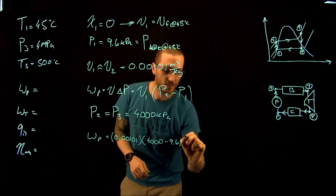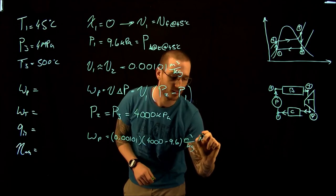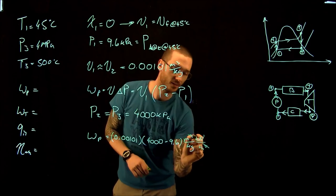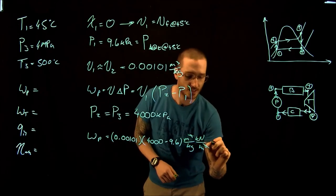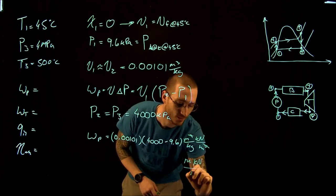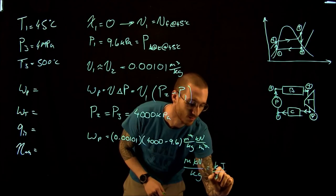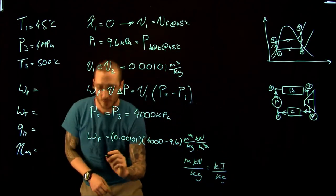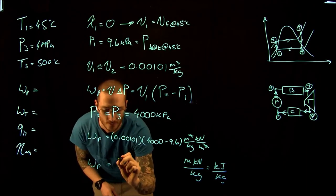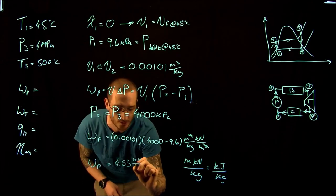The units are m³/kg times kN/m², and canceling m² with m³ gives kN·m/kg, which is kJ/kg. Doing the math, the work of the pump equals 4.03 kJ/kg.